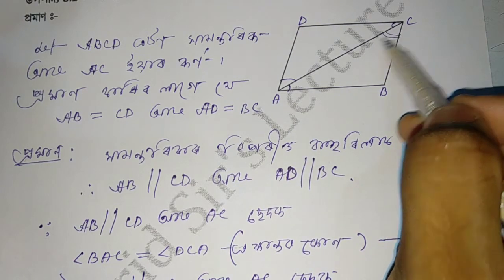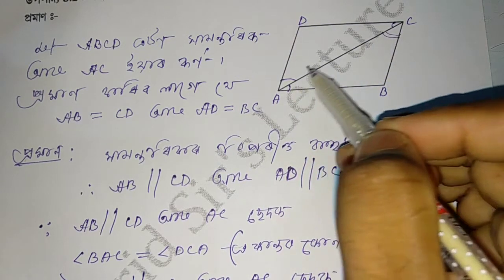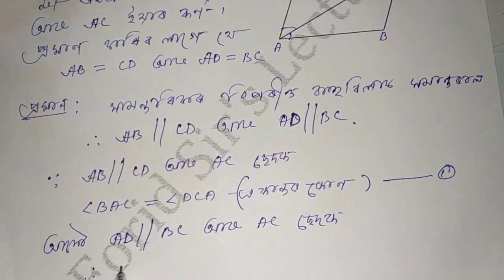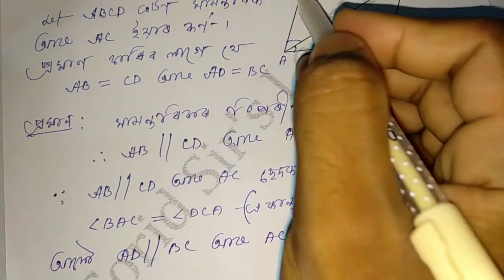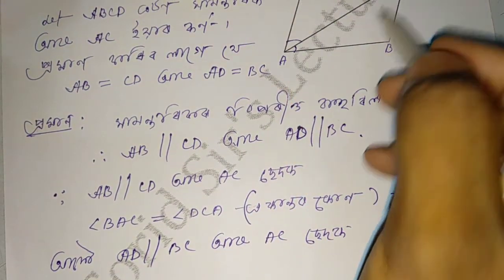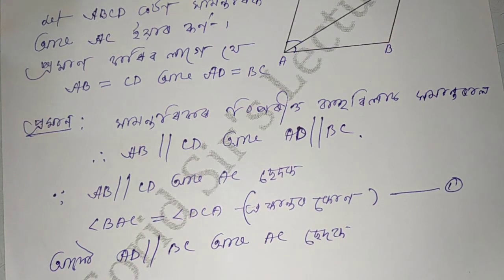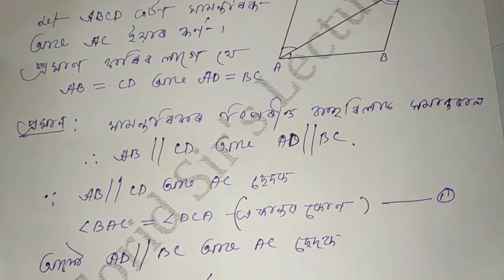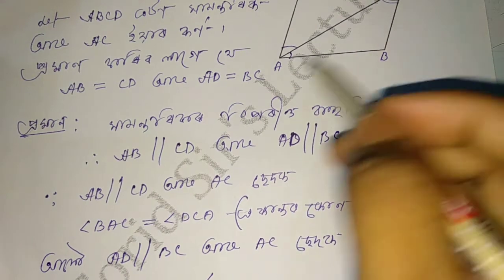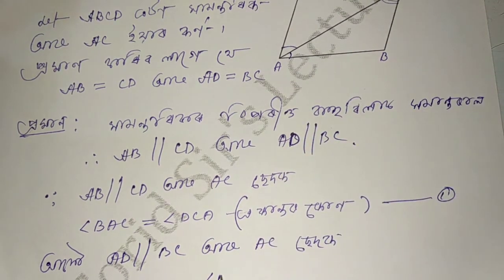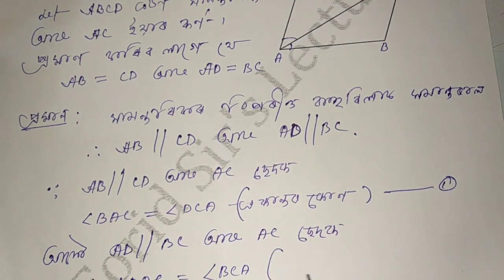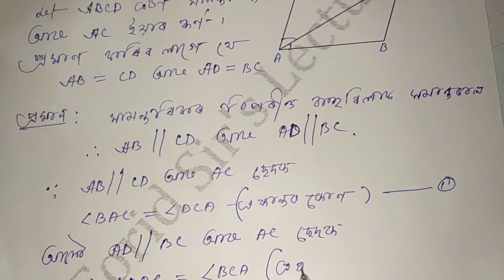AC is AC. Take the angle DAC, angle DAC equal to angle BCA. BC is OK. You take on the dock — you have a counter.